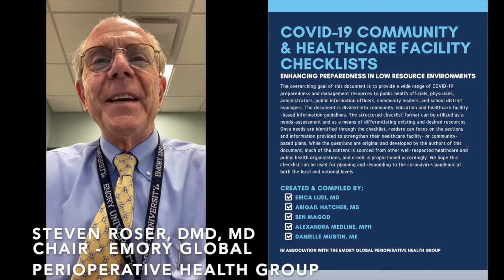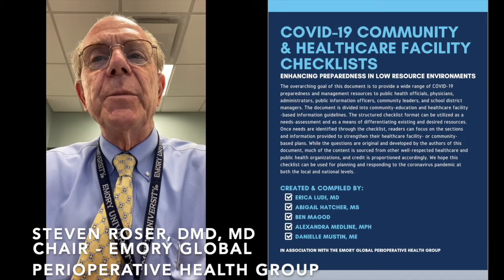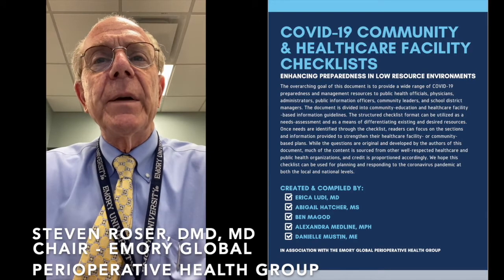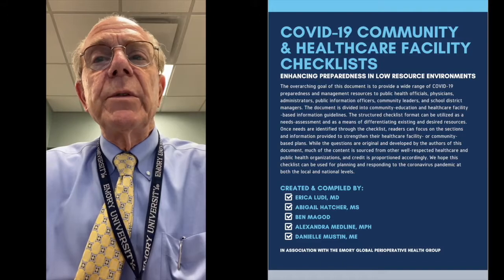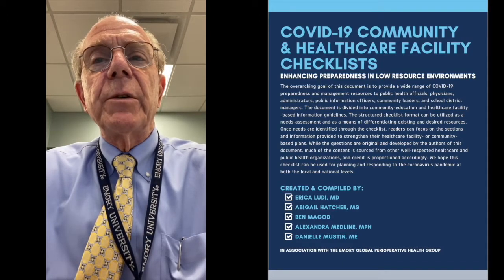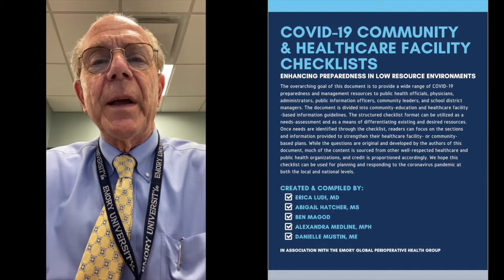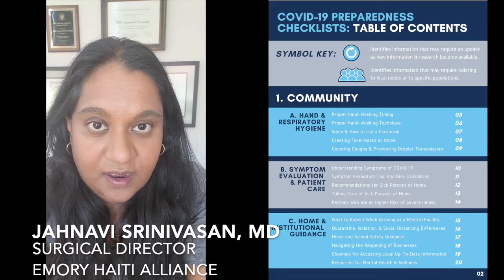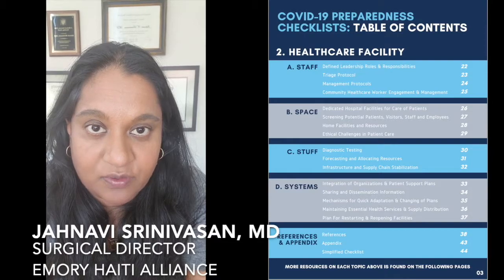Thank you for your interest in this manual entitled COVID-19 Community and Health Care Facility Checklist: Enhancing Preparedness in the Low Resource Environments. The document was researched and written by a group of medical students, Global Surgery Research Fellows, and the leadership of the Emory Global Perioperative Health Group. The purpose of this video is to provide more information about the document, its target audiences, and instructions on how to best interact with the document.